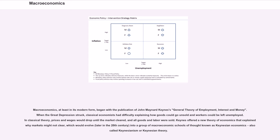Keynes offered a new theory of economics that explained why markets might not clear, which would evolve, later in the 20th century, into a group of macroeconomic schools of thought known as Keynesian economics, also called Keynesianism or Keynesian theory.